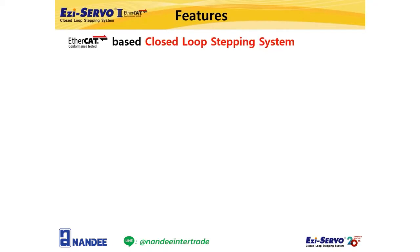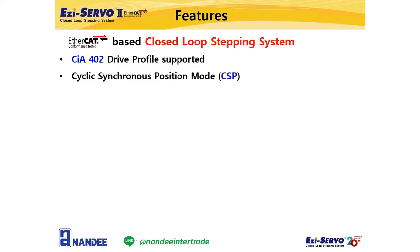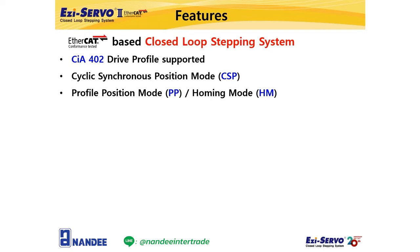Now let's check the features of EZ Servo 2 EtherCAT products. It is an EtherCAT-based closed-loop stepping system product. It supports CIA-402 drive profile, a standard profile for drive motion control. It supports CSP mode that controls the position of the slave by receiving the target position from the master every cycle, profile position mode for general point-to-point movement, and homing mode for origin search.